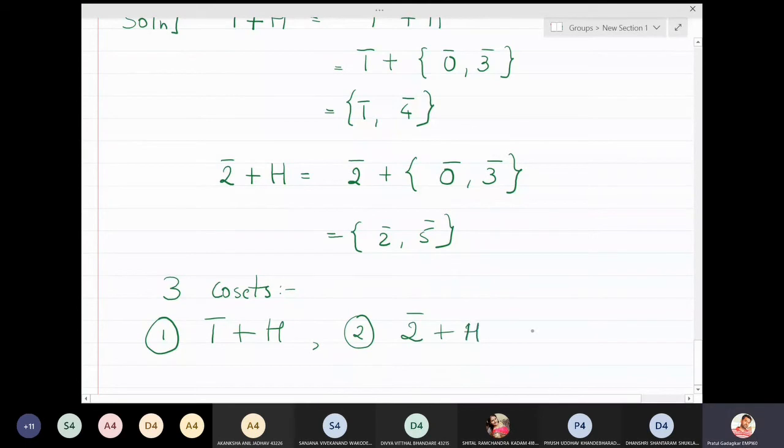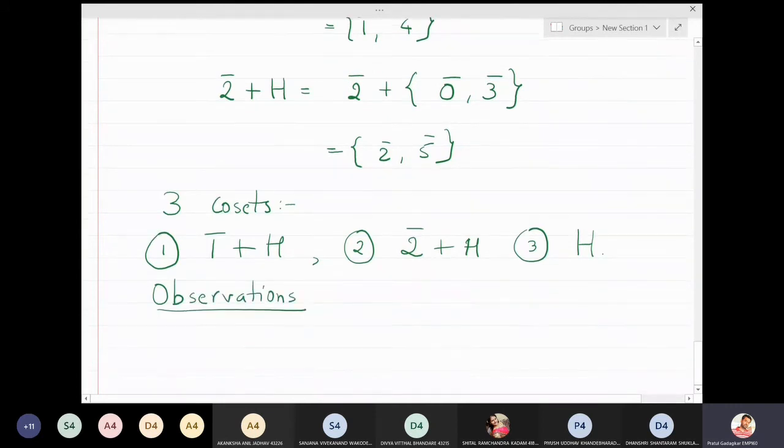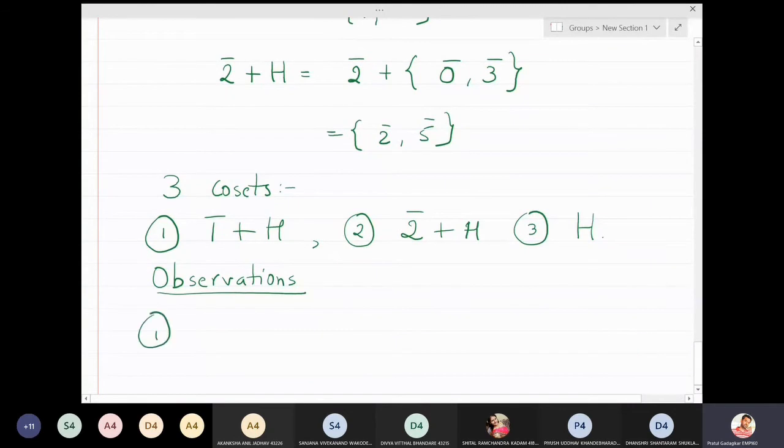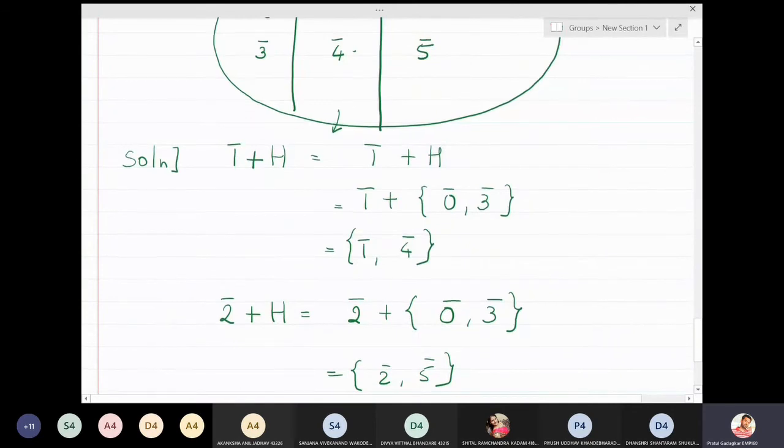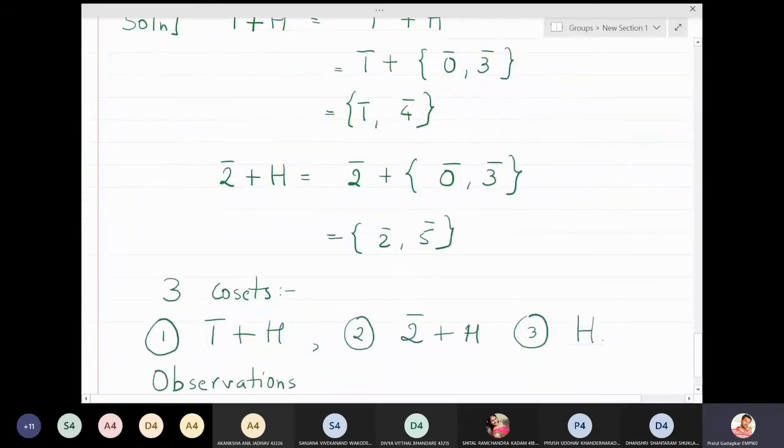Now we have to do some important observations when finding these cosets. What is the very first important observation? We have seen that all three cosets contain different elements. These cosets are mutually disjoint from each other. First coset, second coset have nothing common. They are completely disjoint from each other.